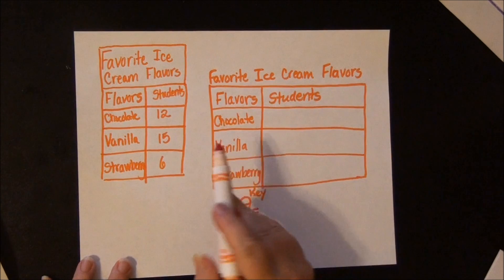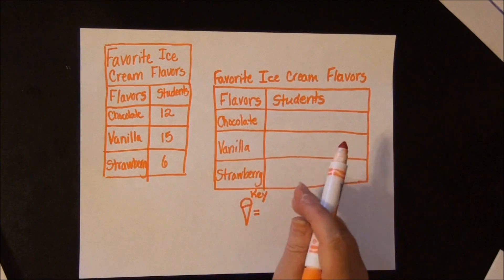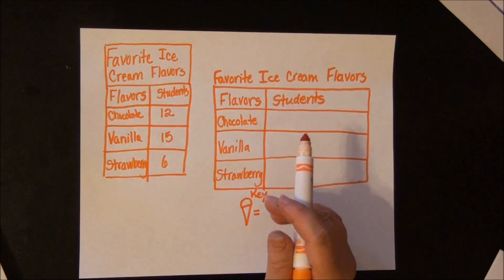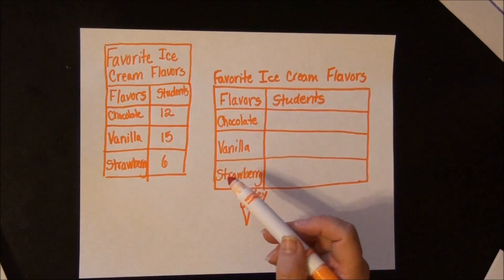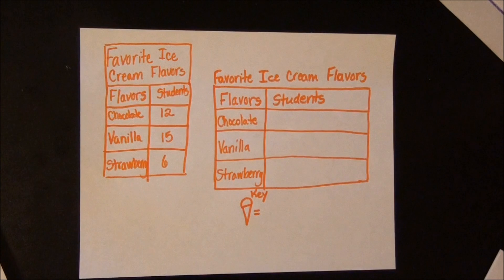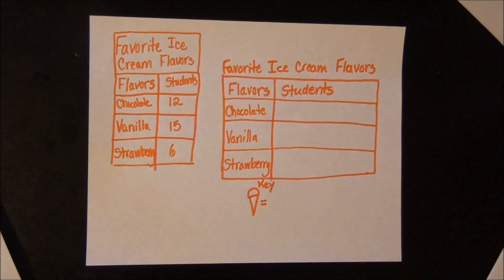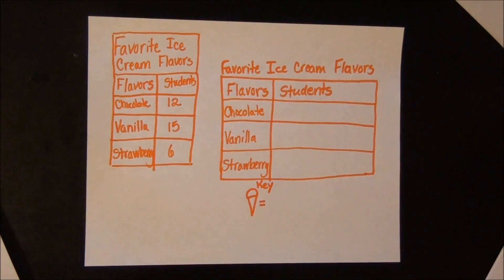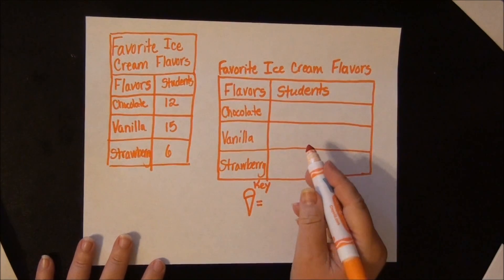So now I'm going to look at my data. I have 12, 15, and 6. Usually graphs are done counting by 2s, 5s, 10s, 25s, 50s, or 100s. I don't want to draw 15 vanilla cones, so I want to draw less than that. I want my symbol of an ice cream cone to represent 2 students — it's a lot less drawing.